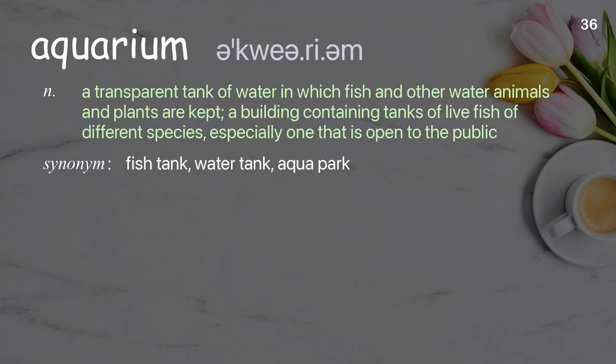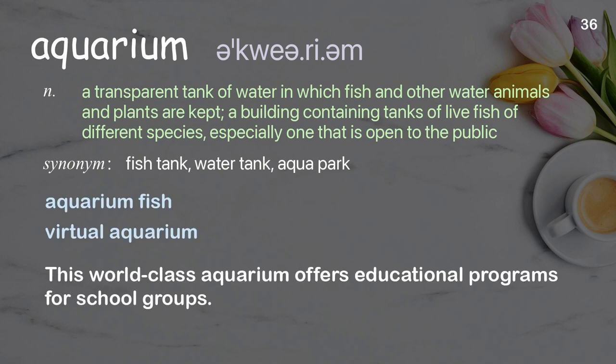Aquarium. A transparent tank of water in which fish and other water animals and plants are kept. Also, a building containing tanks of live fish of different species, especially one open to the public. Examples: aquarium fish, virtual aquarium. This world-class aquarium offers educational programs for school groups.